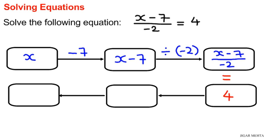The opposite of divided by negative 2 is multiplied by negative 2. So 4 times negative 2 gives me negative 8. So x minus 7 equals negative 8.